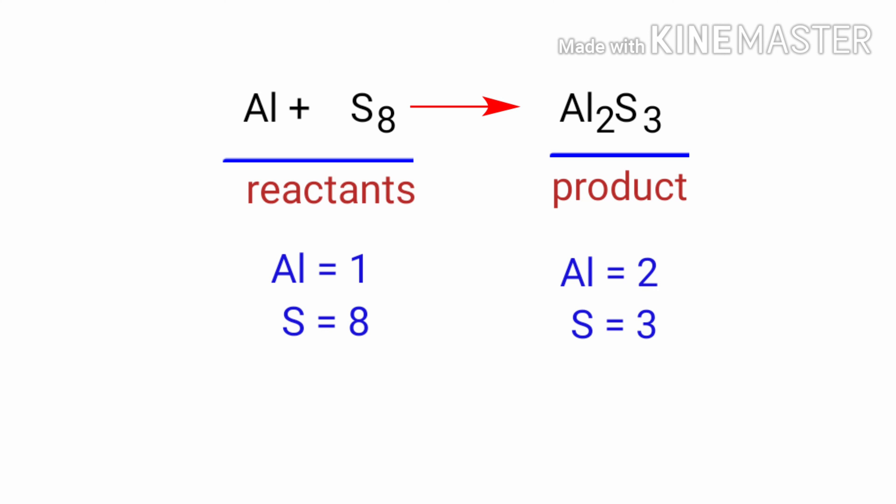In this equation, we need to balance the sulfur atoms first. To do this, we make 24 sulfur atoms on both sides. We need to put a coefficient of 3 in front of S8 and a coefficient of 8 in front of Al2S3.